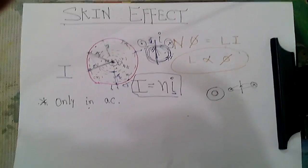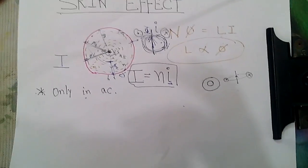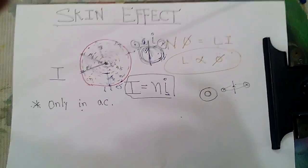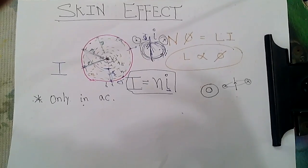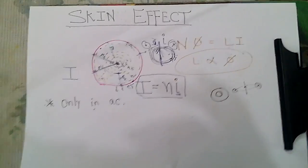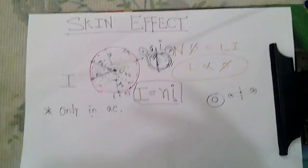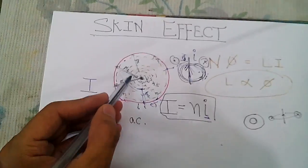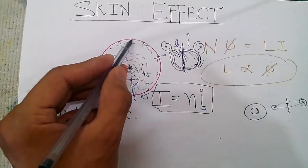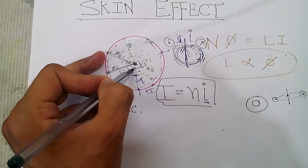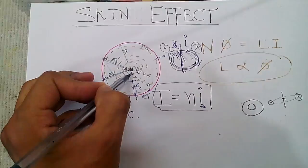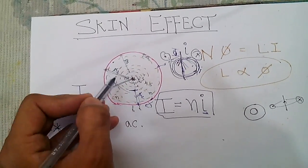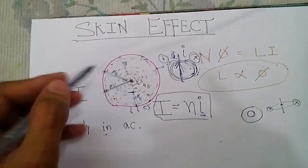Hello friends, welcome. Today's topic of discussion is the skin effect. In the skin effect, current flows only on the surface of the conductor, not in the core. In DC, the current distribution throughout the conductor is uniform. The skin effect occurs only in AC supply.